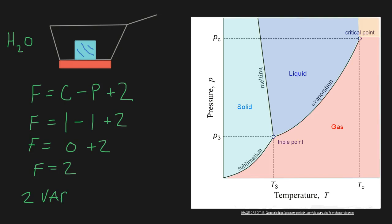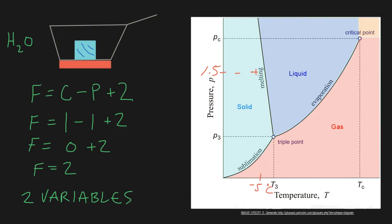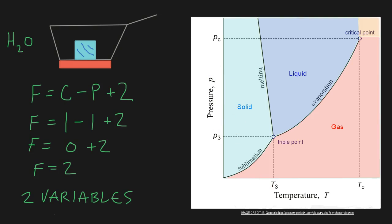Said another way, we need two independent intensive variables. For example, we could have one atmosphere pressure and a temperature of negative 5 degrees Celsius — as long as we're still in the ice field, we're good. We could have 0.5 atmospheres and negative 30 degrees Celsius, and we're still within the ice field. So these two variables can be independent of each other as long as we have one phase — two independent intensive variables such as temperature and pressure.